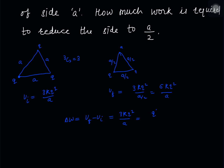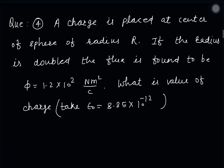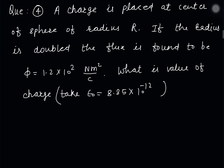So the work done equals 3q²/(4πε₀A). This is the required work for that question. In the next question, there is a charge at the center of a sphere of radius R, and then the radius is changed to 2R.